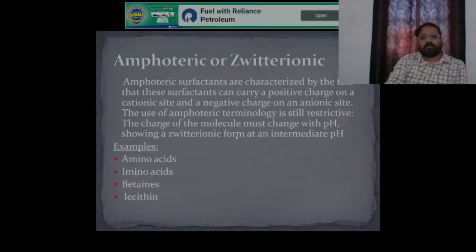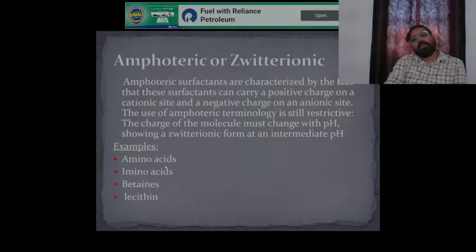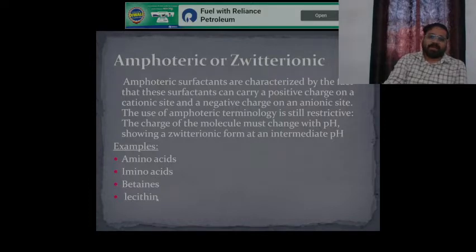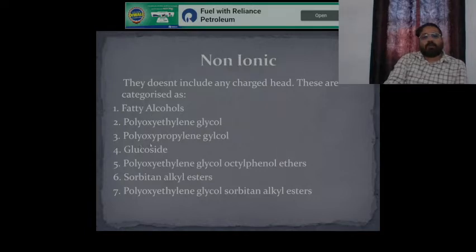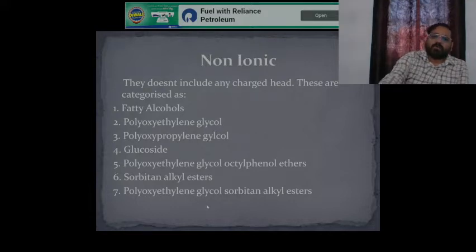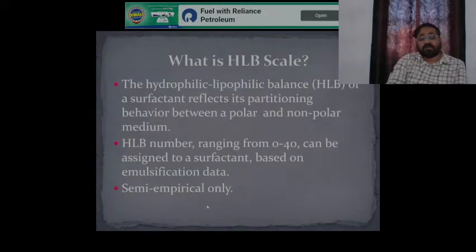Zwitterionic surfactants have both positive and negative nature depending upon the pH. Certain amino acids have COO⁻ and NH₃⁺ groups, so depending on the numbers they may be positive or negative. Betaines and lecithins are certain examples of zwitterionic surfactants. Non-ionic surfactants include fatty acids, polyoxypropylene glycol, and glucosides — they generally have a neutral nature.